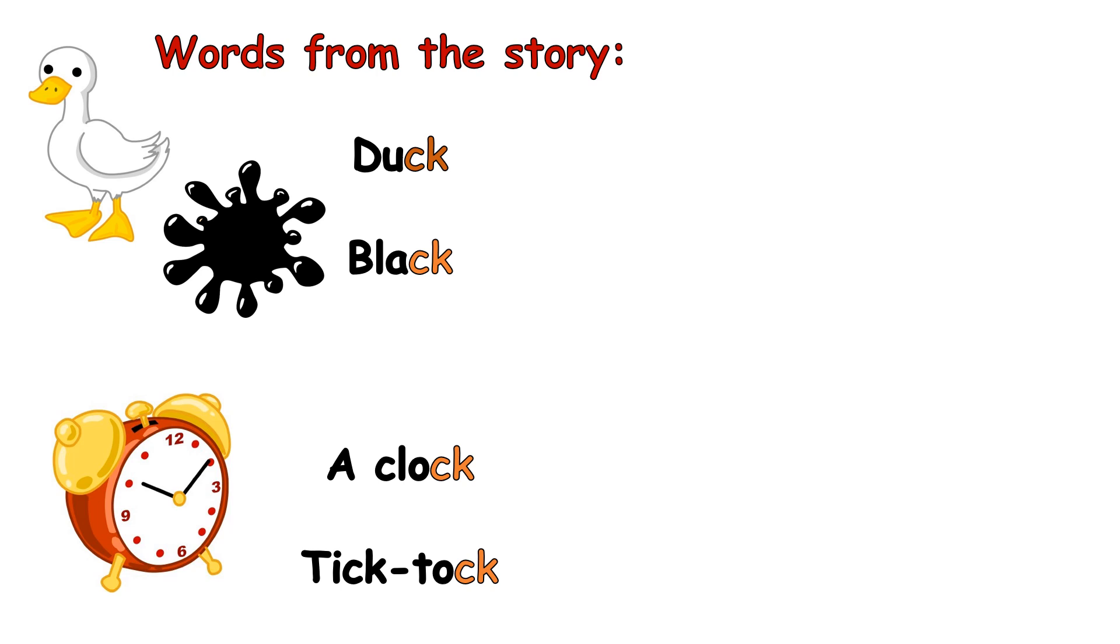What is the sound repeated in all these words? Excellent. It's the K sound. What are the letters that make this sound? Great. It's the C and K. When they come together, we blend them and we say K. Where is the sound repeated? At the end of the words. Great.